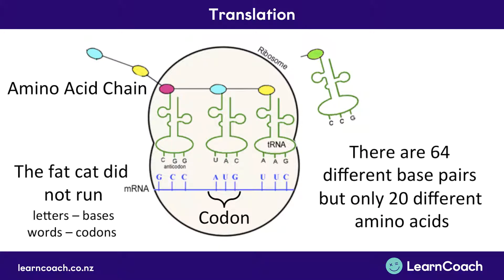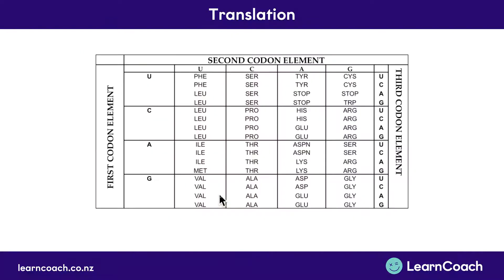There are 64 different base pair combinations you could possibly have — if you work out all combinations of A, C, G and T, there are 64 of them. However, there are only 20 different amino acids we could have. Let me explain how that works in a table.